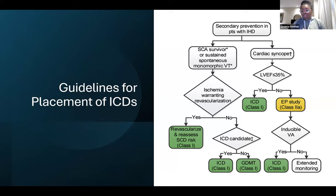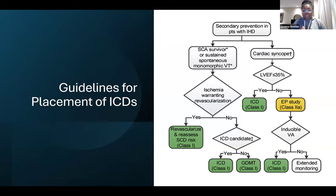For patients with cardiac syncope, especially with an ejection fraction less than 35%, it is still a class one indication to put in an ICD. But sometimes you want to see whether it's due to VT or not, particularly if the EF is greater than 35%. For those patients, it's a class two indication to do an EP study to see if they have inducible ventricular arrhythmias — if they do, put in an ICD; if not, extended monitoring with an implantable loop recorder may be warranted, though that is disconcerting.